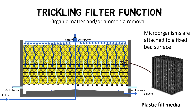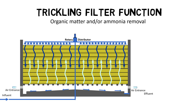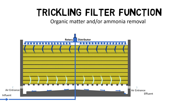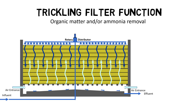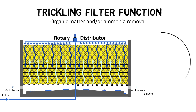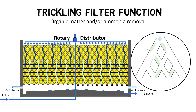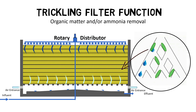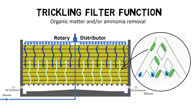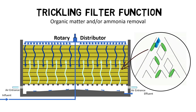Wastewater from primary clarifiers is continuously trickled over the first layer of plastic-fill media using a rotary distributor. While wastewater is traveling down to the bottom of the trickling filter, a cross-corrugated pattern within the plastic-fill media ensures a good water-air mixing.